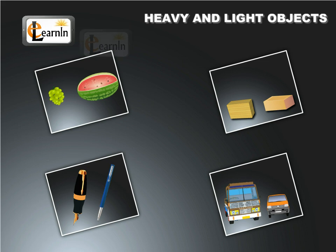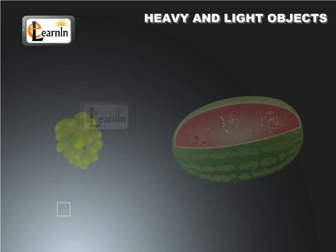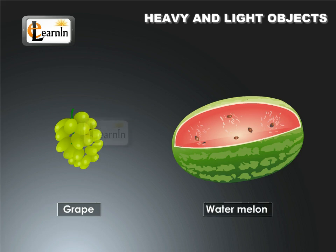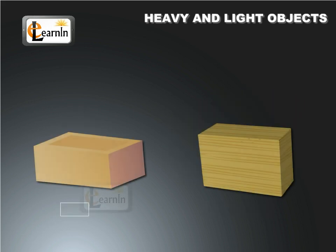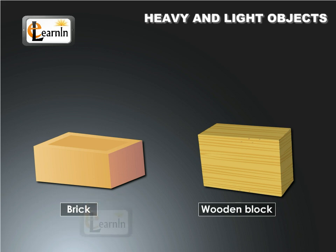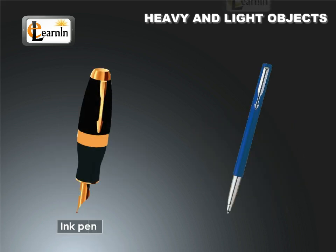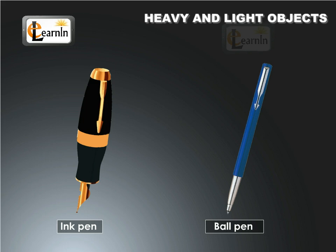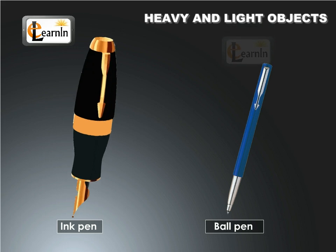Here are some more examples of heavy and light objects. See if you are able to identify which object is heavy and which is light. A grape and a watermelon — a watermelon is heavier than a grape. A brick and a wooden block — a wooden block is lighter than a brick. An ink pen and a ball pen — an ink pen is heavier than a ball pen.